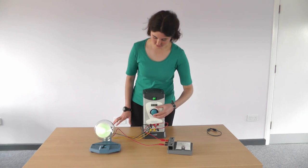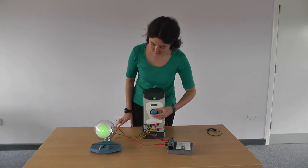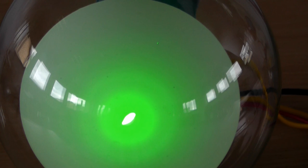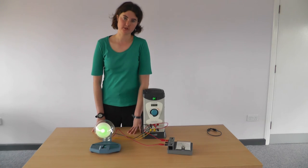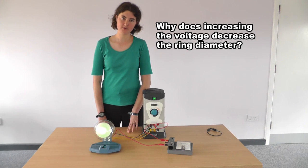Now, watch what happens as I turn the voltage up further. The ring diameter is decreasing. For any students watching, have a think. Why does this happen?